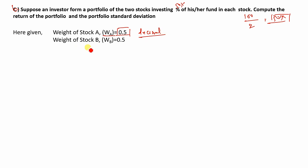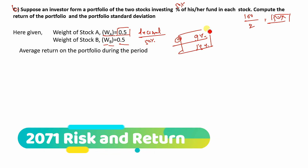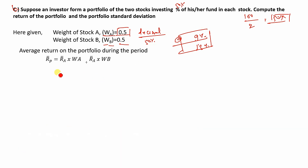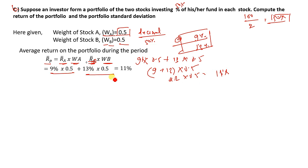The weight of Stock A is 0.5 and the weight of Stock B is 0.5, which is 50% each. The average return of the portfolio is calculated as: weight of A multiplied by average return of A, plus weight of B multiplied by average return of B. That is 9% × 0.5 plus 13% × 0.5, which gives us 11% as the portfolio return.